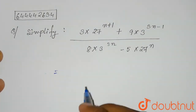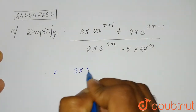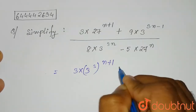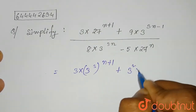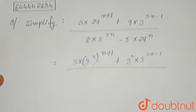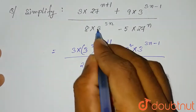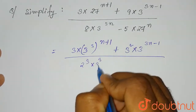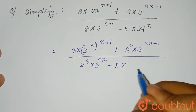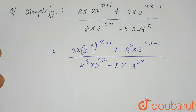So this will be equal to — if we rewrite from here: 27 can be written as 3 cubed, so it will be 3 into 3 to the power 3, to the power n+1. Plus 9 can be written as 3 squared, multiplied by 3 to the power 3n minus 1, all divided by 2 cubed multiplied by 3 to the power 3n minus 5, multiplied by 3 to the power 3n (since 27 = 3 cubed).